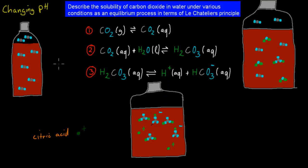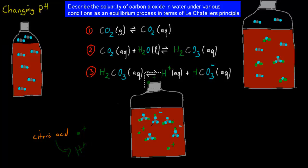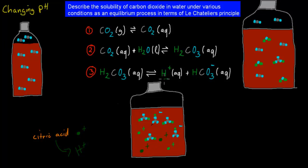Now if we change our pH — for example, if we add citric acid to the bottle, which releases hydrogen ions — we're adding more hydrogen ions to the third step. That means we have more hydrogen ions than before, so the equilibrium goes to the reverse reaction to counteract that change, which means we get an increase in carbonic acid.